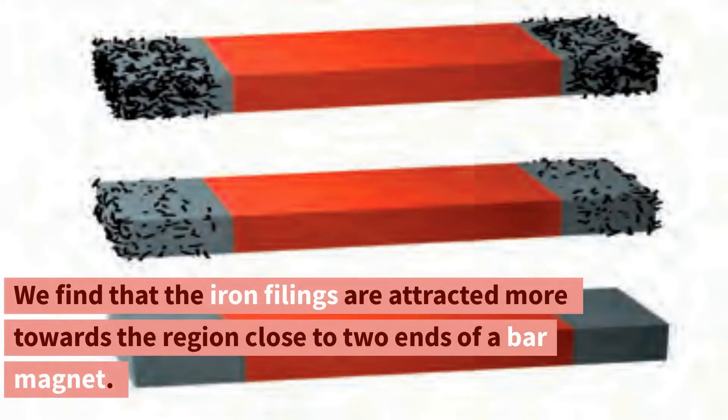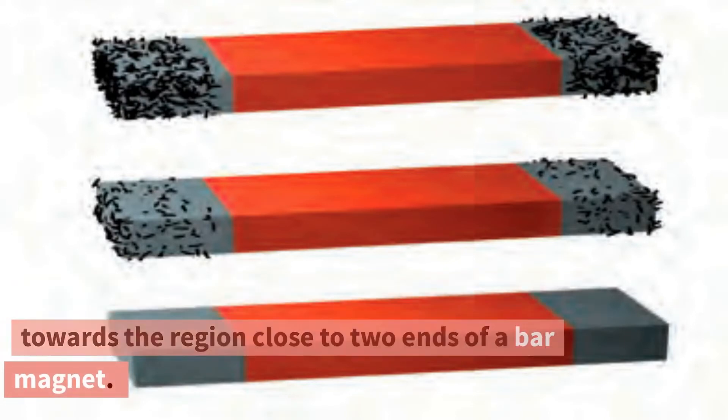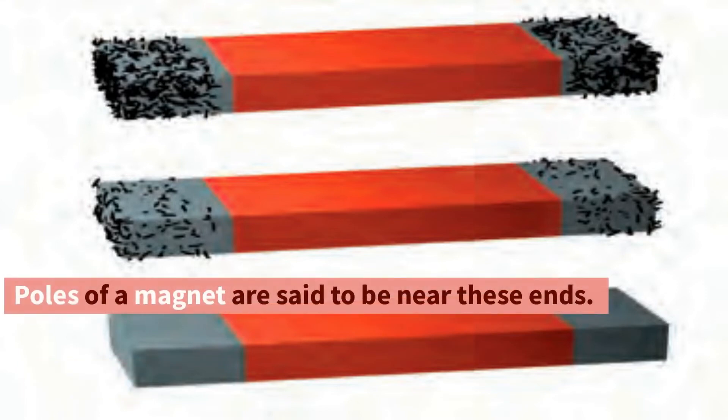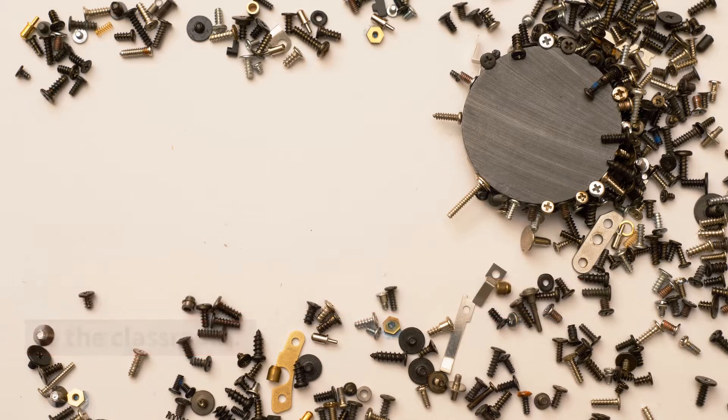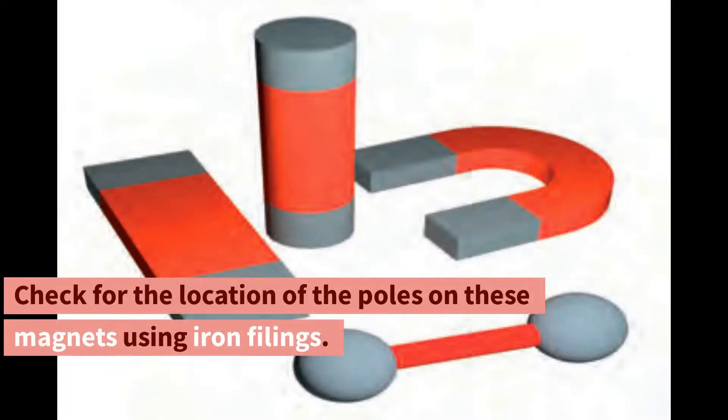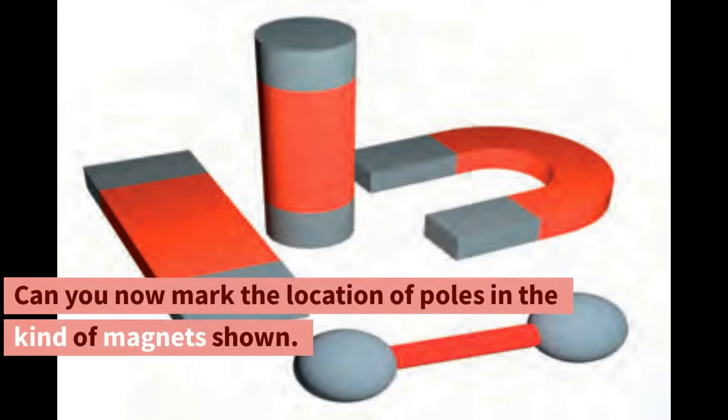We find that the iron filings are attracted more towards the region close to two ends of a bar magnet. Poles of a magnet are said to be near these ends. Try and bring a few magnets of different shapes to the classroom. Check for the location of the poles on these magnets using iron filings. Can you now mark the location of poles in the kind of magnets shown?